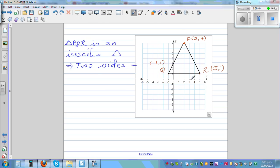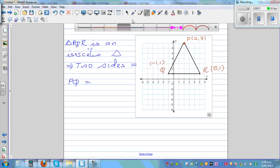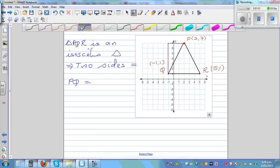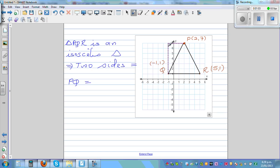So let's find side PQ. What's the length of PQ? To find the length of PQ, let's draw a right angle triangle. So let's join P and Q by a right angle triangle like this. So this is a right angle.